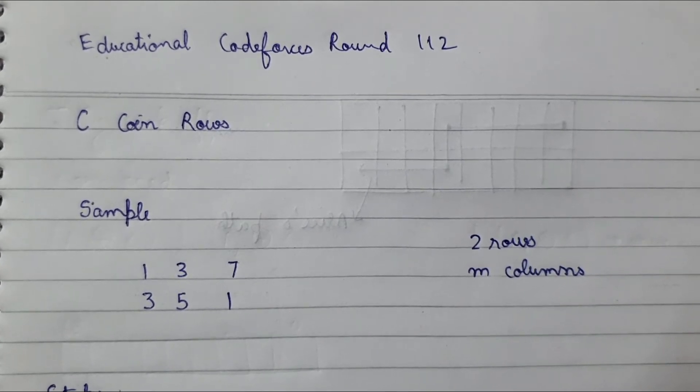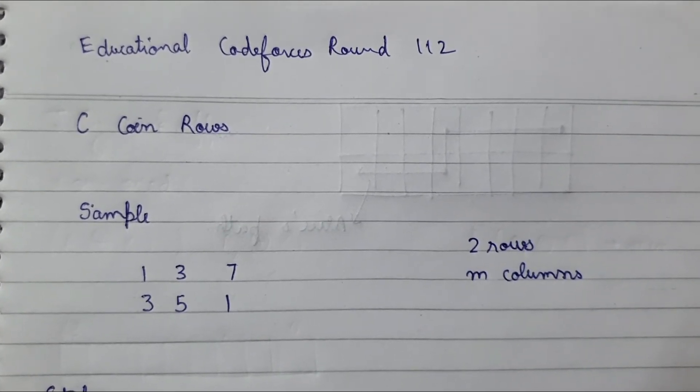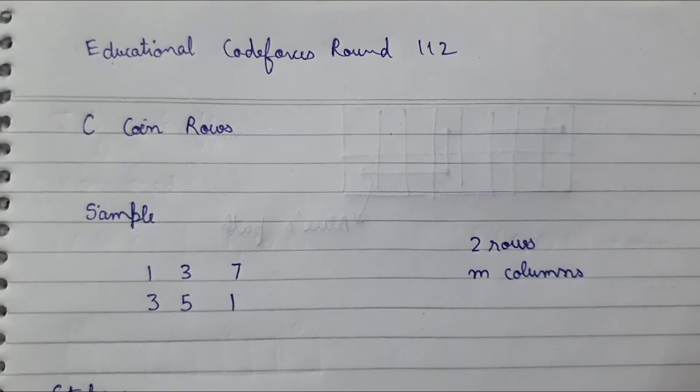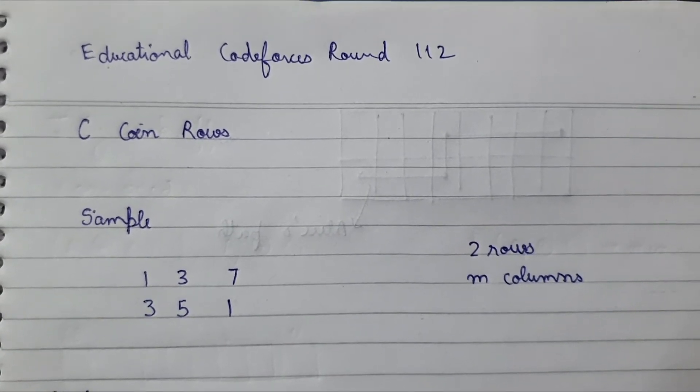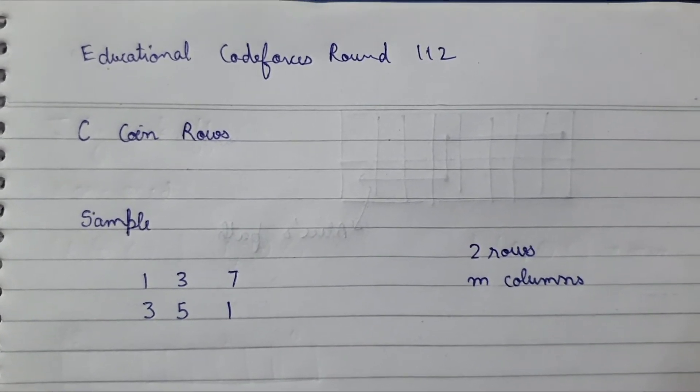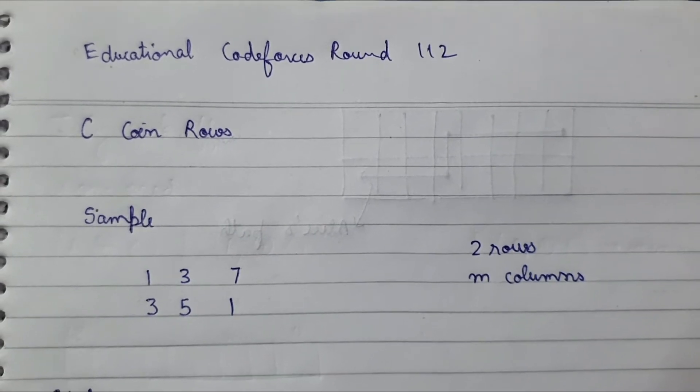Because in the sample input, as we can see, if Alice gets the maximum score, she travels through 1, 3, 7, and 1.